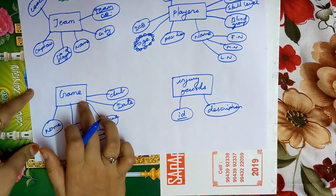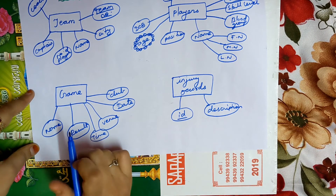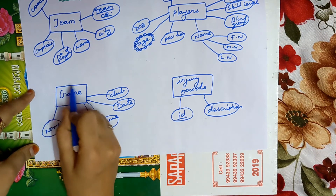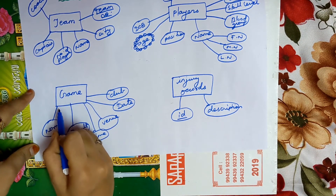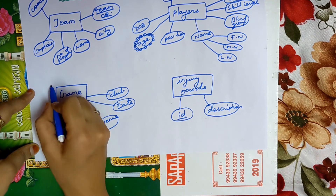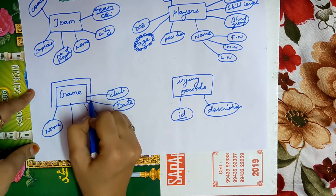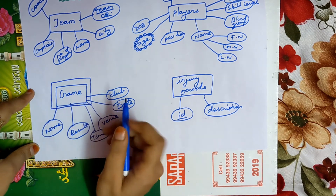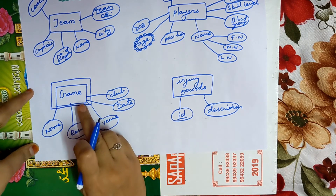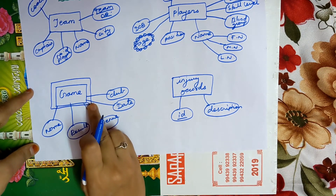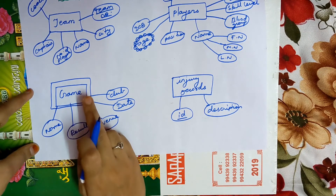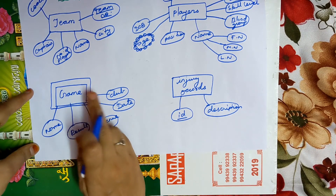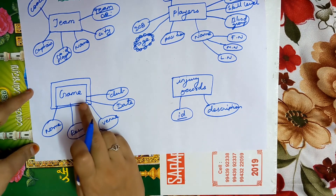A weak entity set must be written inside a double rectangular box. We had drawn only one rectangular box for game, so we need to draw another rectangular box outside it. Game is a weak entity set and must be written inside a double rectangular box.